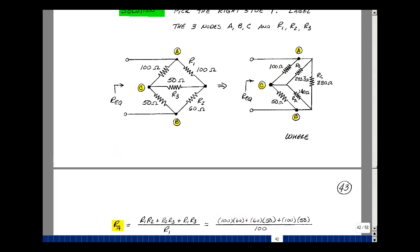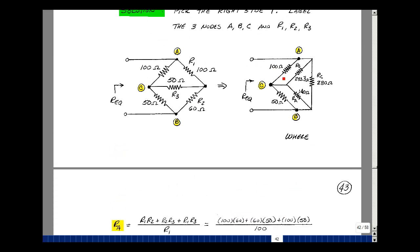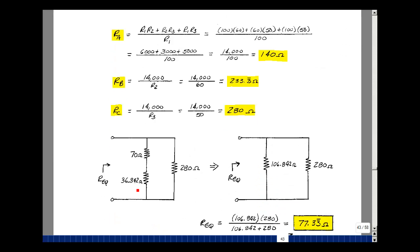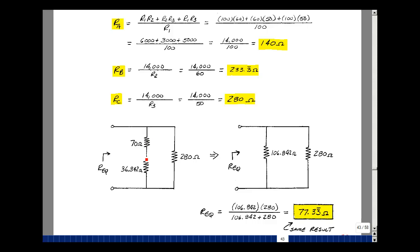Okay, let's scroll back up here real quickly. So these two in parallel, I took the product over the sum of my calculator, and it's going to be smaller than 100. These two in parallel will be smaller than 50. Let's just get those values. I got 70 and 36.842. Now I put these two in series, and I get 106.842. And then that's in parallel with 280, product over the sum, and I get 77.333. The same result as last time.